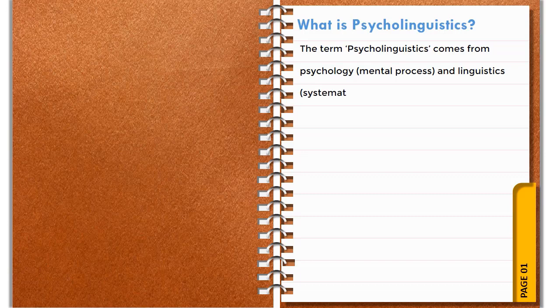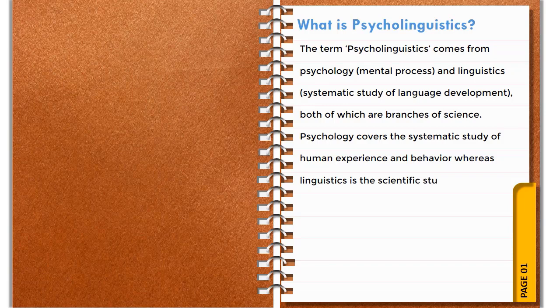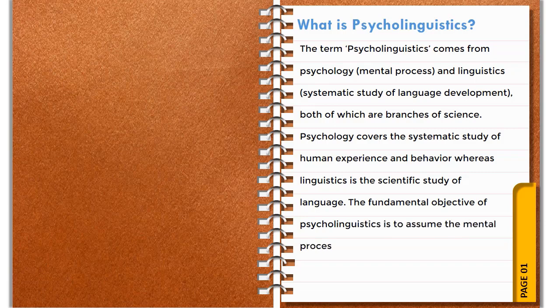What is psycholinguistics? The term psycholinguistics comes from psychology — the systematic study of mental processes — and linguistics — the systematic study of language development. Both are branches of science. The fundamental objective of psycholinguistics is to understand the mental processes of learning, producing, and understanding language.